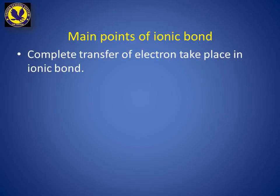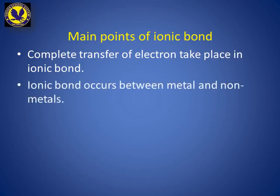In an ionic bond, there is a complete transfer of electrons from one atom to another. The second point is: ionic bond occurs between a metal and a non-metal. This bond is called an ionic bond because it involves ions.